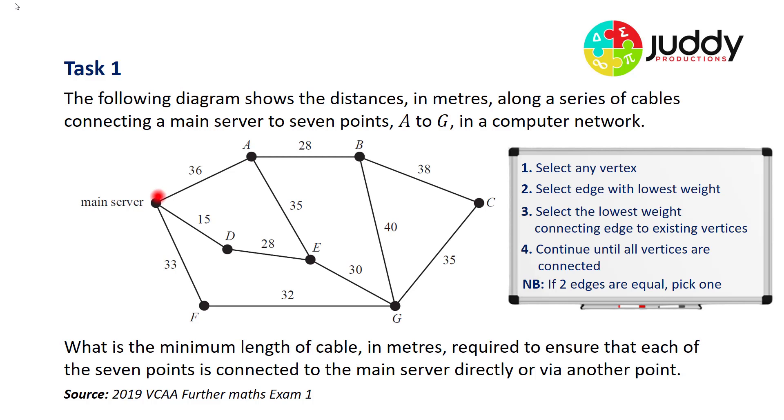So coming off the main server, I have one edge with a weight of 36, another with a weight of 15, and yet another with a weight of 33. So I'll select the 15 as the edge with the lowest weight. I now have two vertices to consider, the main server and vertex D. So looking at the options, I have a weight of 36 coming off the main server, a weight of 33 coming off the main server, and a weighted edge of 28 coming from vertex D. 28 is the minimal or lowest weight. So I'll select that.